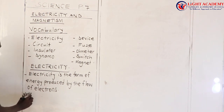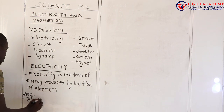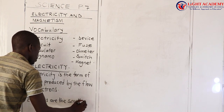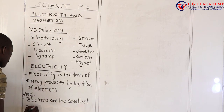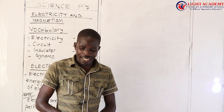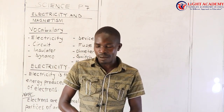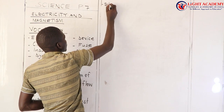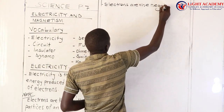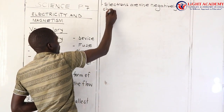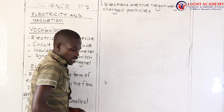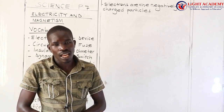You must know something about electrons. Electrons are the smallest particles of an atom, and electrons are the negatively charged particles, while protons are the positively charged particles.